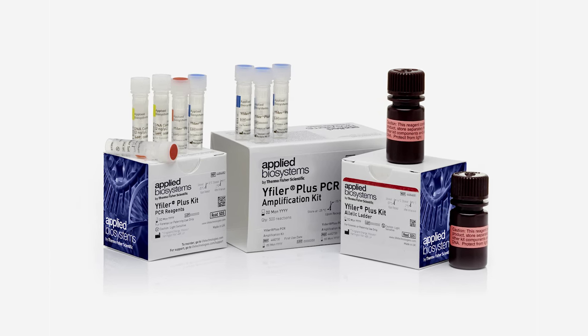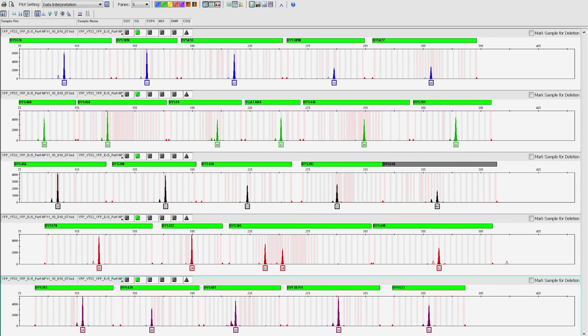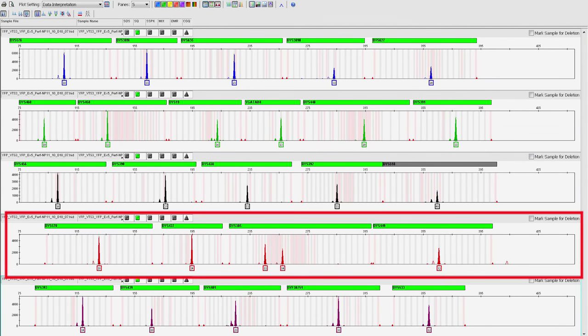Now this is where YFiler Plus kit comes into play. YFiler Plus is the first 6-dye, 27-multiplex YSTR kit that has 7 rapidly mutating YSTRs and 11 mini-YSTRs. This sample was in fact processed with YFiler Plus, and here is the profile viewed in GeneMapper IDX analysis software. For this sample, we had an initial male concentration of 0.07 nanograms per microliter, which allowed for an amplification input of 0.7 nanograms of male DNA and a total input of 10,000 nanograms of female DNA. As you can see here, even with a large amount of female DNA being present, we were able to still get a full male profile, without any artifacts, and obtain optimal intracolor balance.